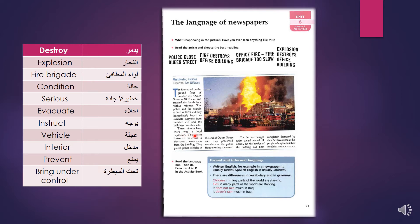Three minutes later there was a loud explosion — kan hunak infijaar kabeer (كان هناك انفجار كبير). The police instructed the crowds in the street to move away from the building. They placed police vehicles at the end of Queen Street and prevented members of the public from entering the street. The fire was brought under control around eleven o'clock, but the interior of the building had been completely destroyed.